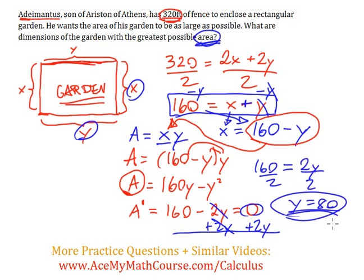What does this mean? This means that if y is 80, or when y is 80, we are going to have the garden with the greatest possible area. But now we're going to have to solve for x as well, because I just know y so far.